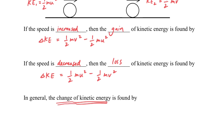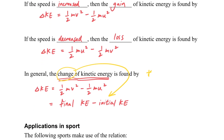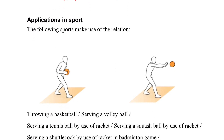But in general, when we consider the change in kinetic energy, we will use the final KE minus the initial KE. So when we consider the change of kinetic energy, we are not using the larger one minus the smaller one, but using the final one minus the initial one. So make sure you get that.